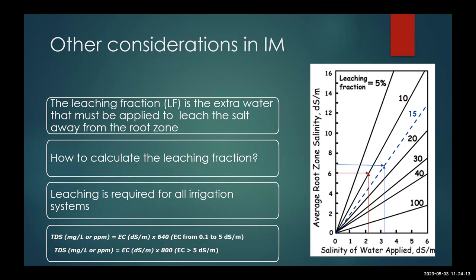One consideration is salinity — as we move toward well water it has more salinity, so we have to consider leaching the salt below the root zone. Leaching depends on two things: the salinity of the water (x-axis) and the salinity of the soil itself (y-axis). For example, if one is close to three and the other is around seven, you would need about 15 percent extra to get rid of the salt. So you need to apply 15 percent more than your crop water requirement.